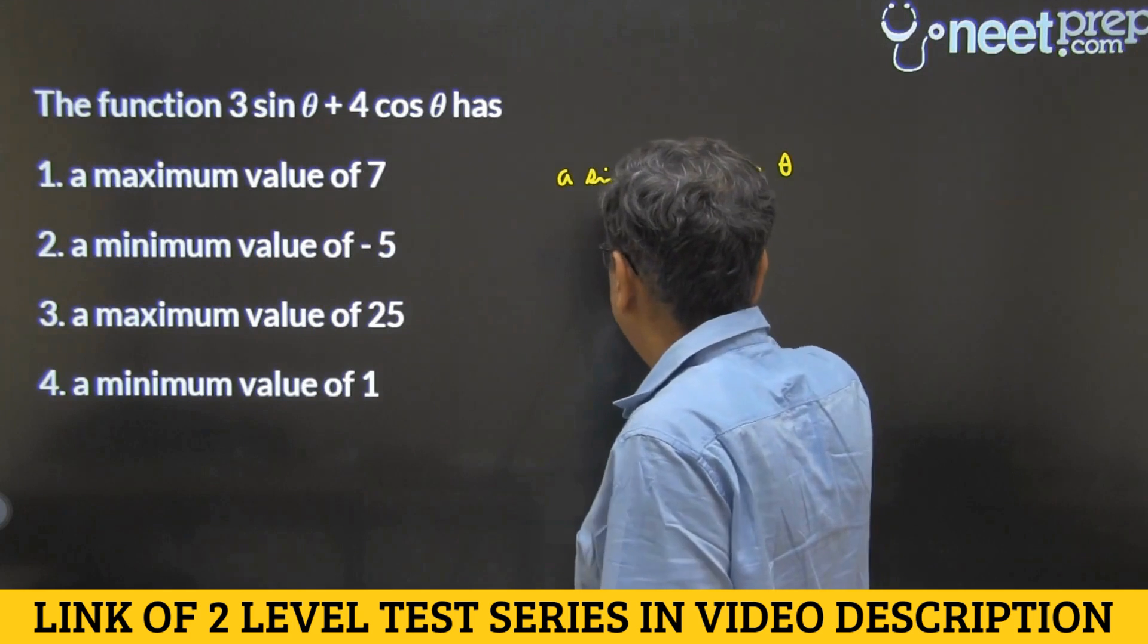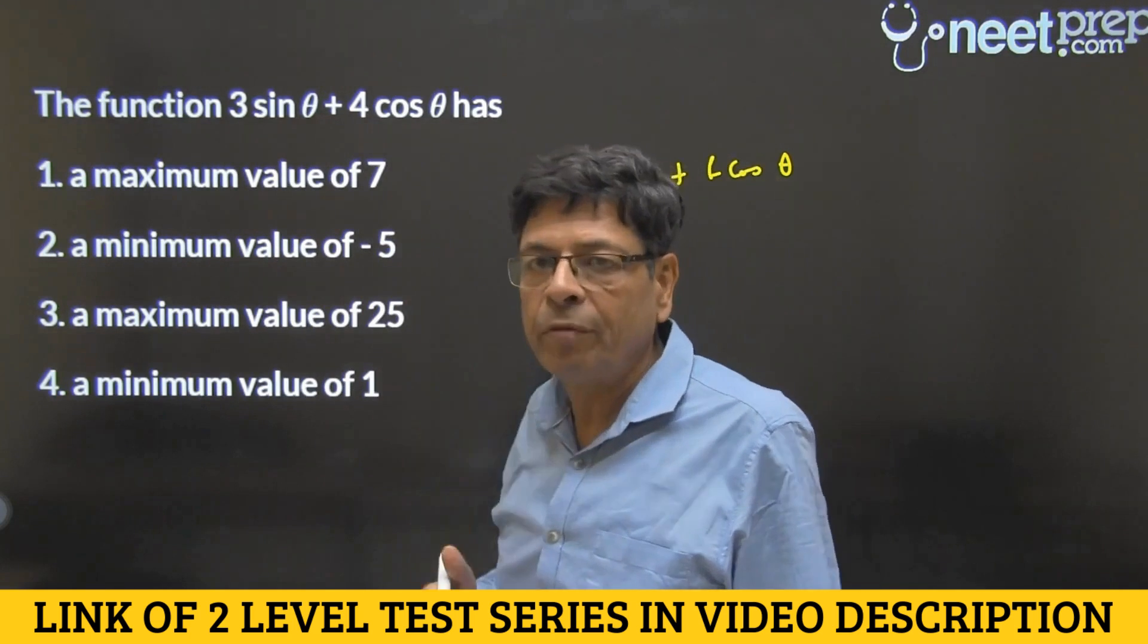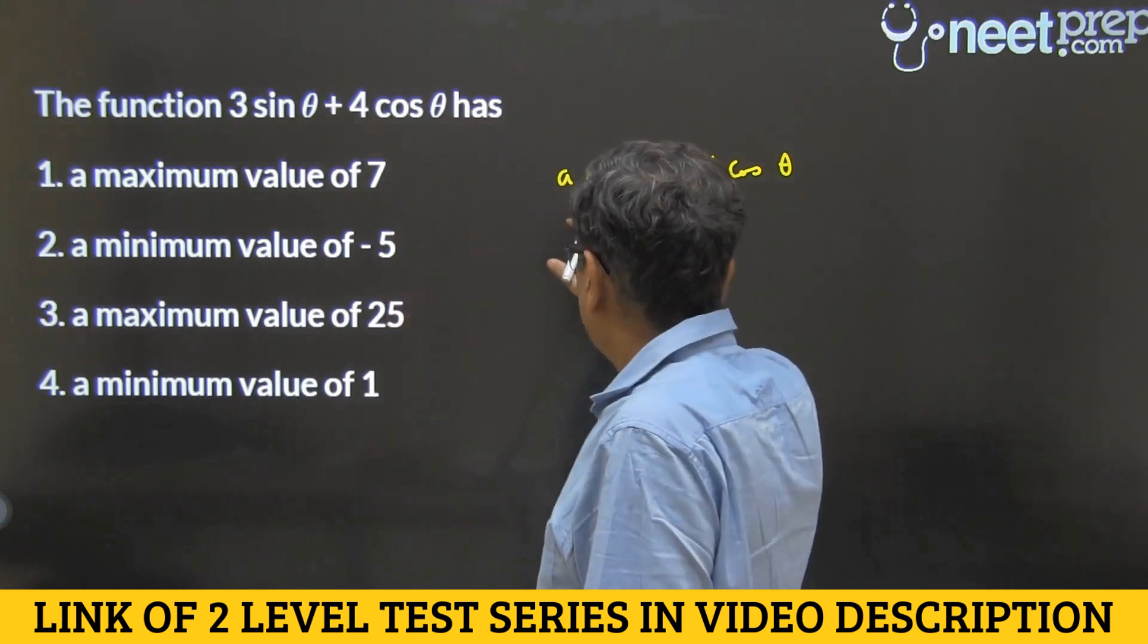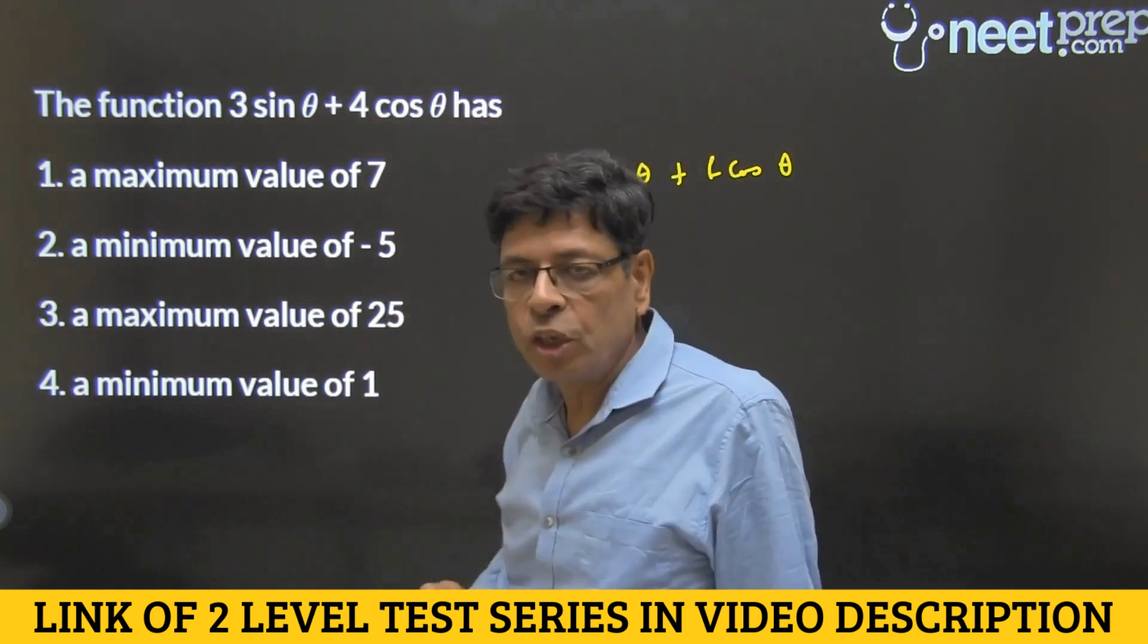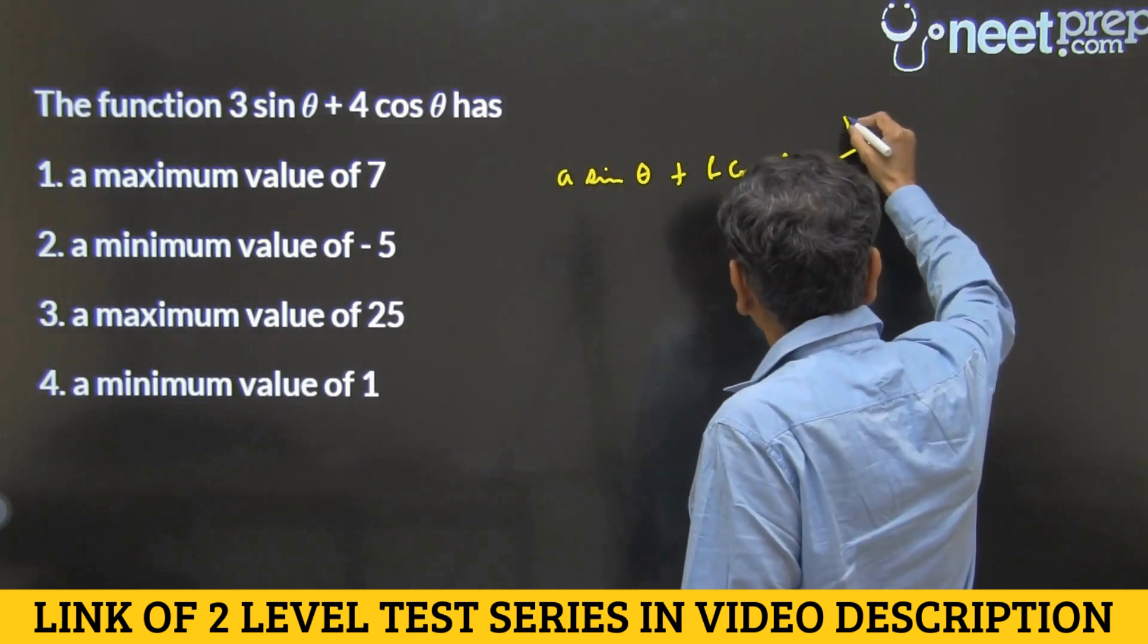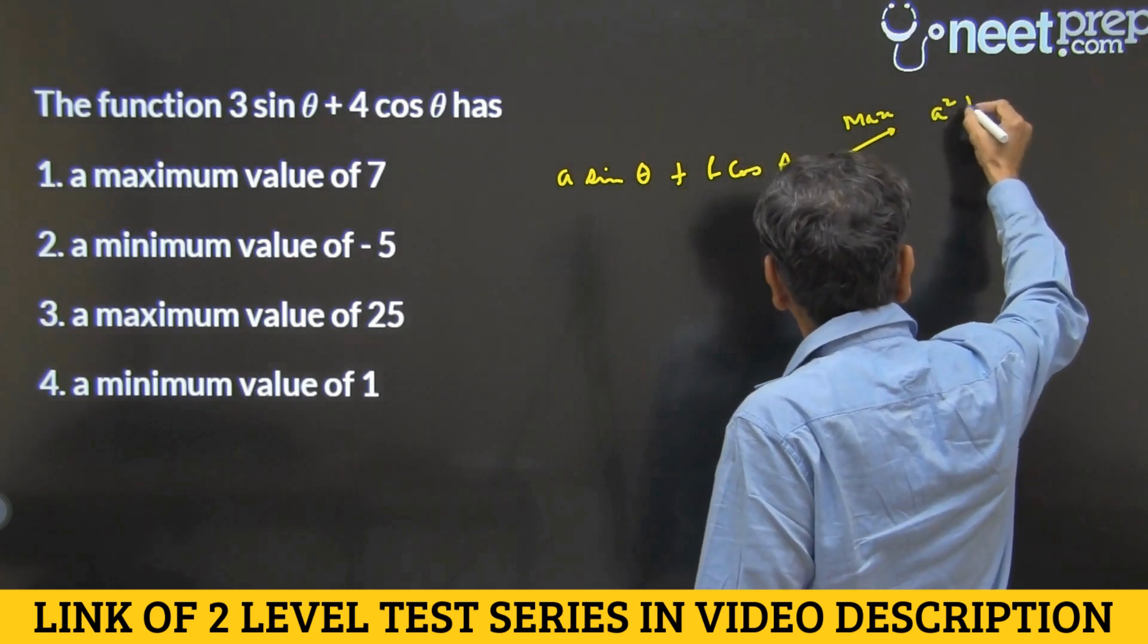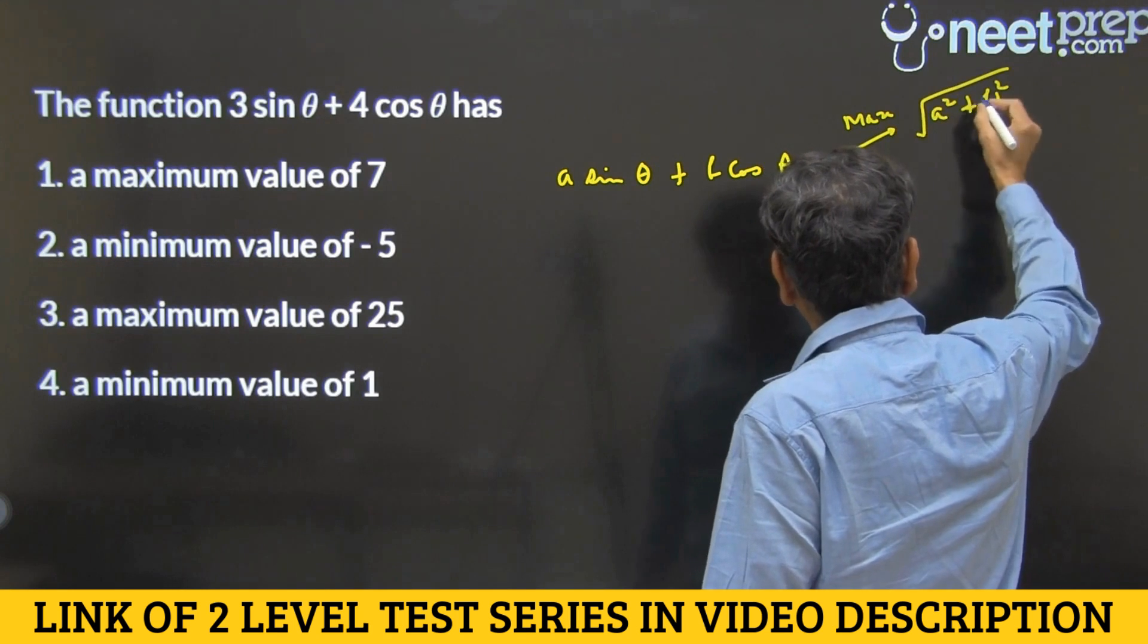And then its value can be found out, maximum or minimum value can be found out very easily. So it turns out that the maximum value of this function is √(A² + B²) and minimum value is as much but negative.